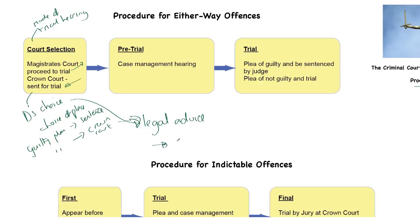Whilst making that choice, the defendant is entitled to something called advanced disclosure, which means they're entitled to see the evidence against them. Having decided, they then go to a case management hearing, where the date is planned, what evidence is required is planned, and what witnesses will be needed. All of the general administration of the case happens pre-trial. The Crown Court sits less frequently, it's busier, and it listens to longer cases, so the planning has to be far more careful.